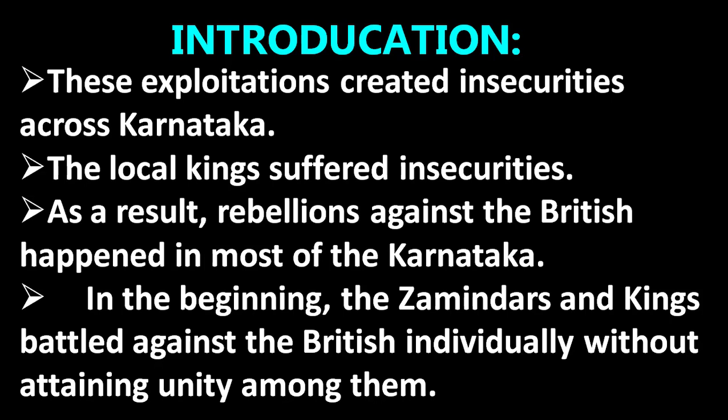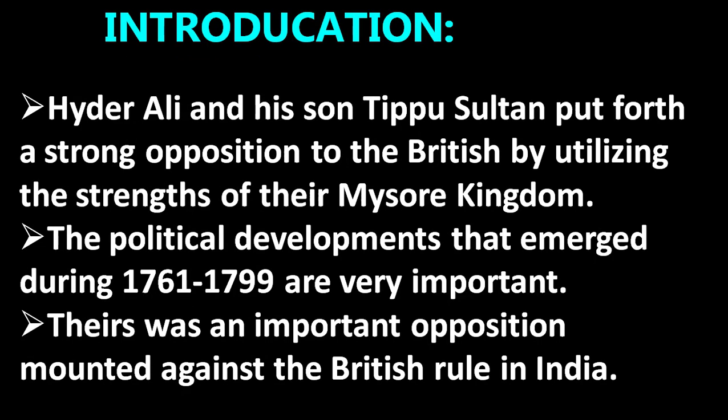In the beginning, Zamindars and kings battled against the British individually without attaining unity among them. Haidarali and his son Tipu Sultan put forth a strong opposition to the British by utilizing the strengths of their Mysuru kingdom. The political developments that emerged during 1761 to 1799 are very important. There was an important opposition mounted against the British rule in India.